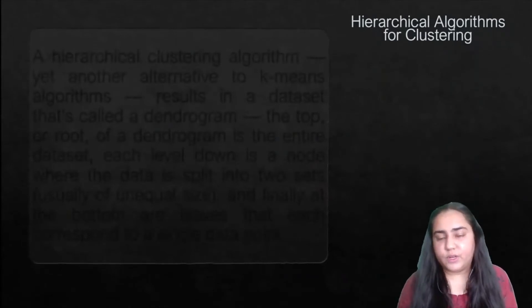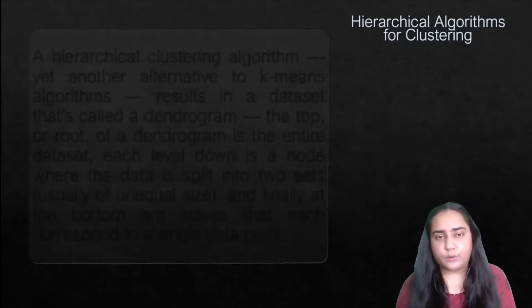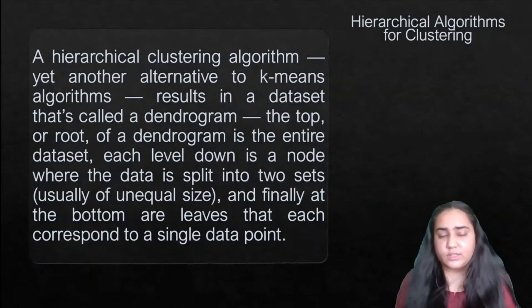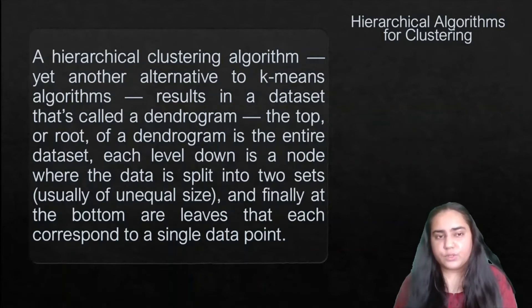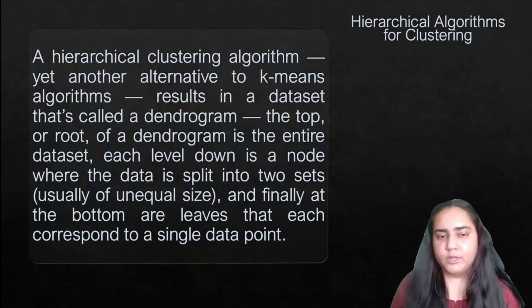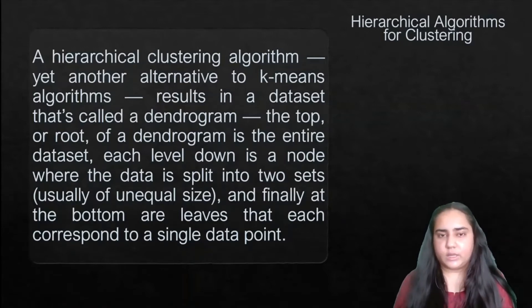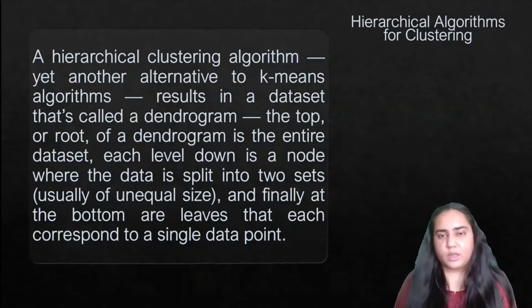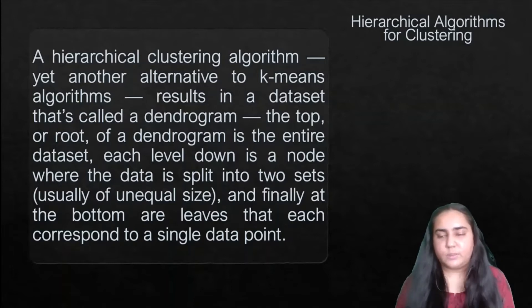Next, we have hierarchical algorithms for clustering. This is yet another alternative to K-means. It results in a data structure called a dendrogram. At the top — the root — is the entire dataset. At each level down, there is a node where the data is split into two sets, usually of unequal sizes. At the bottom are leaves that each correspond to a single data point. So essentially you're creating a type of tree. The root contains the entire dataset, the leaves contain single data points, and those points are merged upward — that's why it's called a hierarchical algorithm.